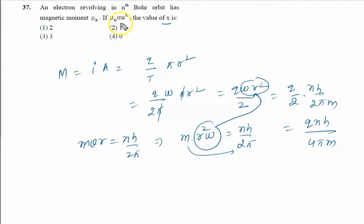We have to write μn. μn means that m is proportional to n power x. n power x, n power is 1 only. So value of x is 1. The right answer of this question is option 2, that is 1.